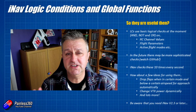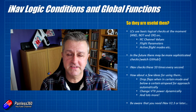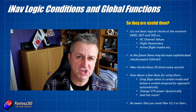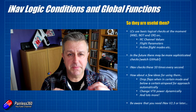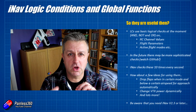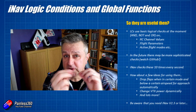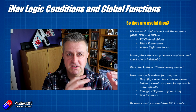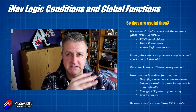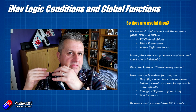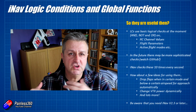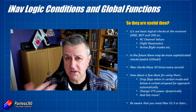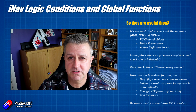The bit that actually does the stuff is called global functions. That's the part that can be turned on or off by one of the logical switches being flicked. So a logical condition detects whether something has happened, and then you tell the global function what you want to do with it. There are loads of options.